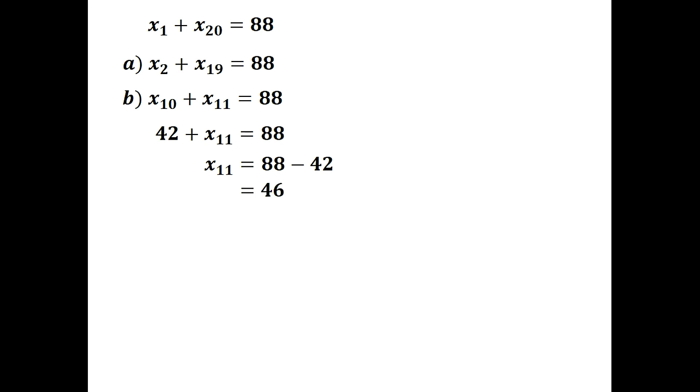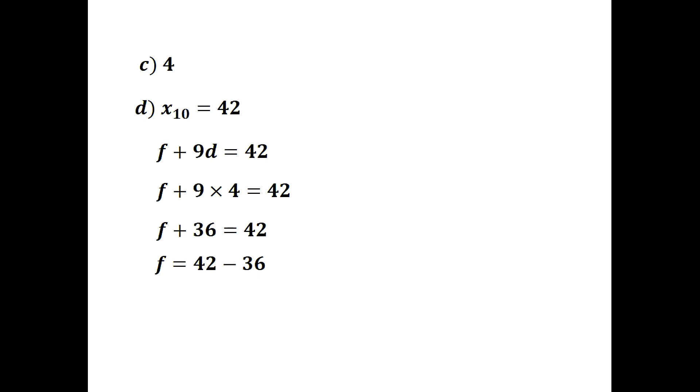For the third part, the common difference: the 10th term is 42 and the 11th term is 46, so clearly the common difference is 4. For the last part, the first term: using the 10th term, first term plus 9 times common difference equals 42. So first term plus 9 into 4 equals 42, giving first term plus 36 equals 42, and therefore the first term is 6.